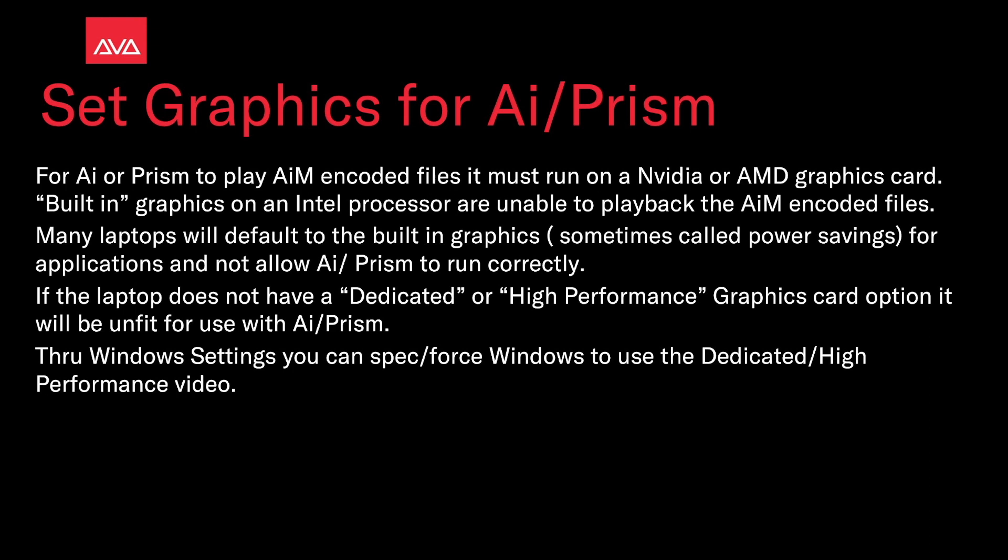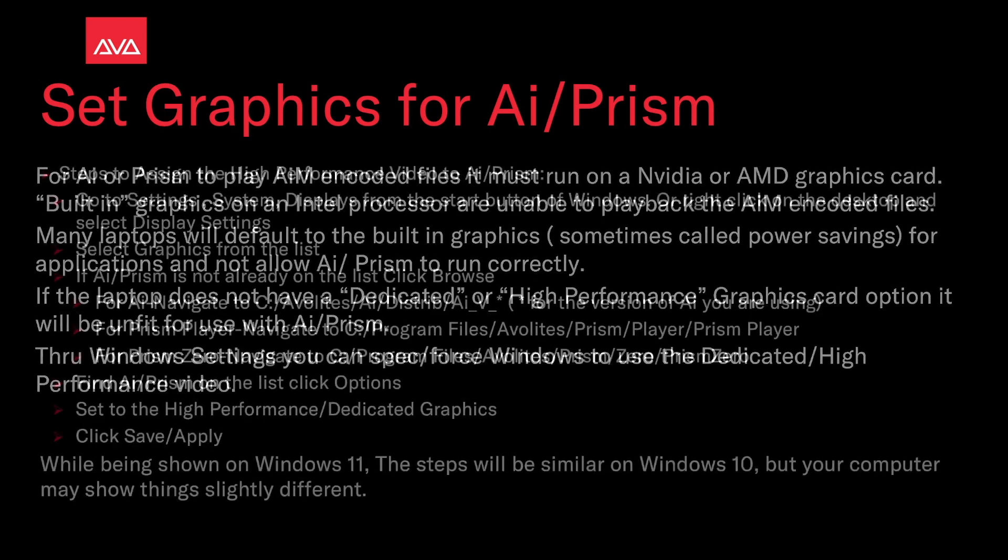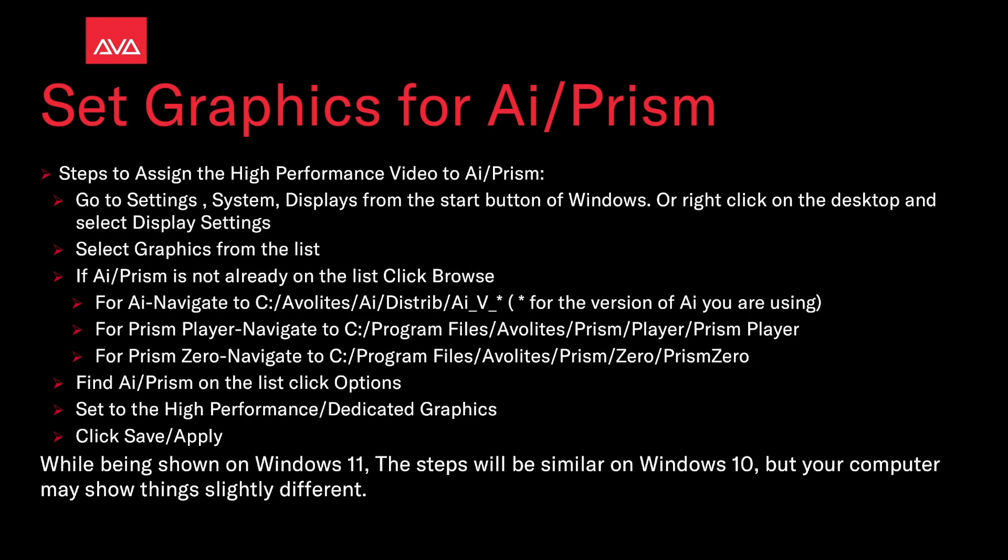Through Windows settings you can specify or force Windows to use the dedicated or high performance video. To assign the high performance video to AI or Prism, go to Settings > System > Displays from the Start button, or right-click on the desktop and select Display Settings.